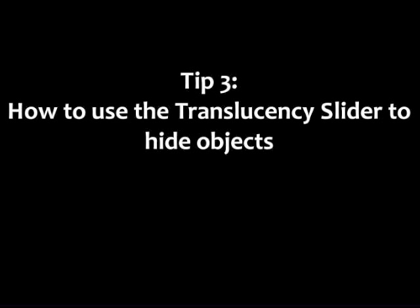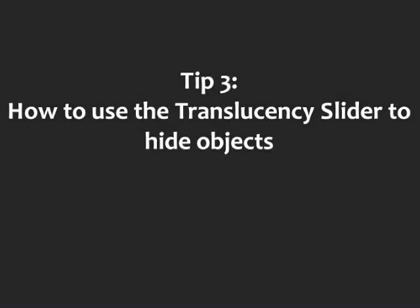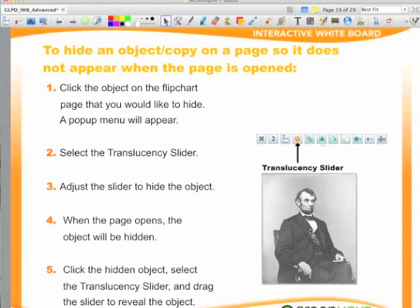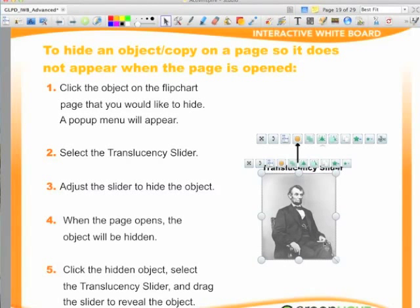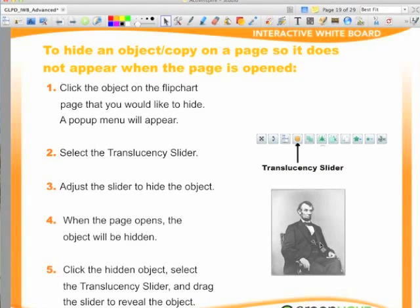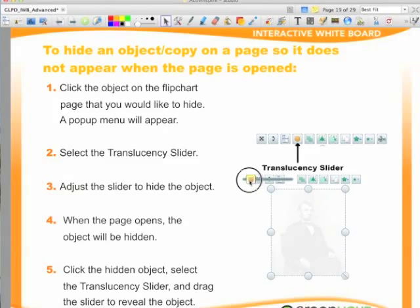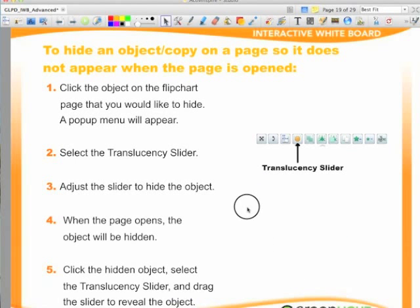Tip 3: how to use the translucency slider to hide objects. I'm going to drag an image onto the page to show you how to hide an object or copy on a page so it does not appear when the page is opened. Click the object on the flipchart page that you would like to hide. A pop-up menu will appear. Select the translucency slider and adjust the slider to hide the object. When the page opens, the object will be hidden.